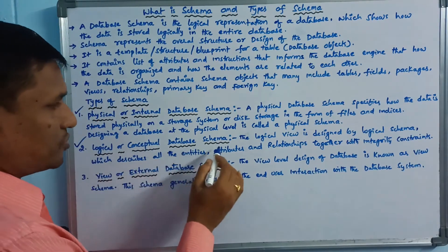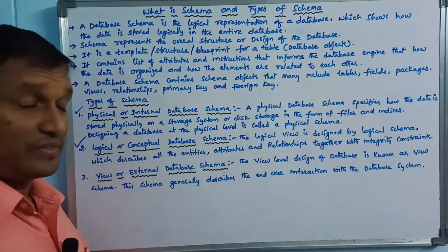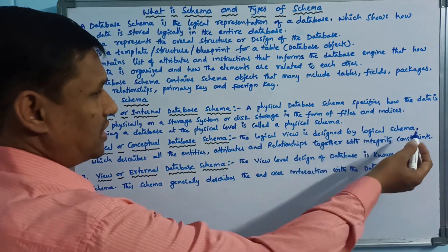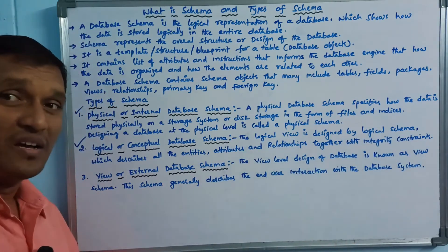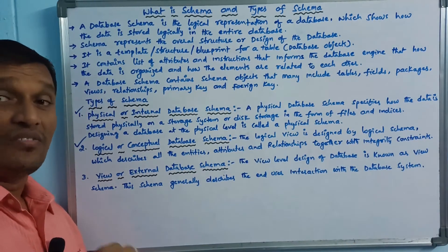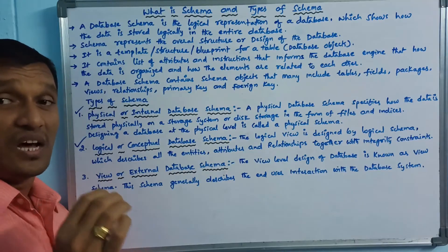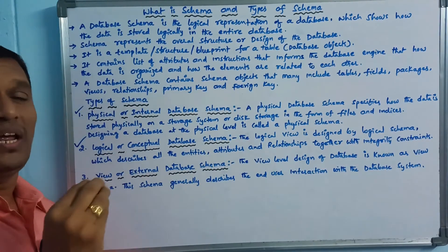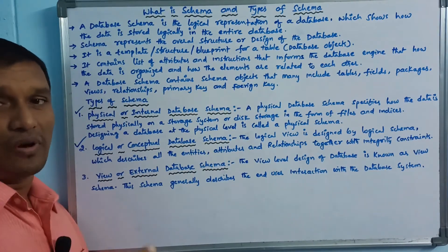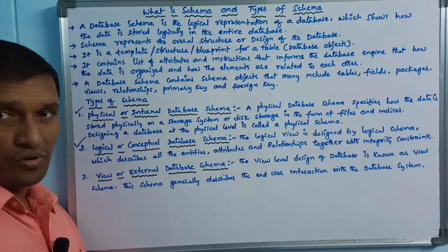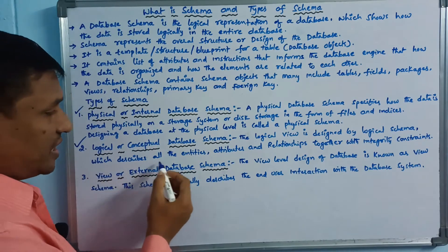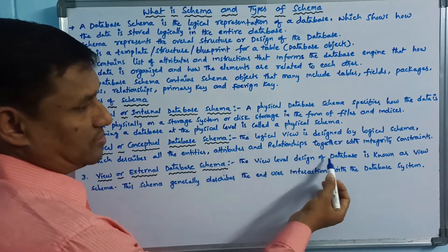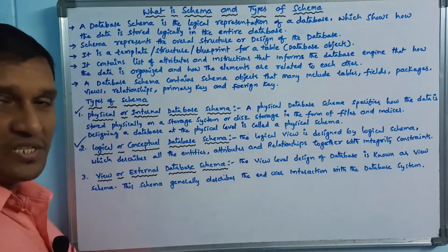The second one is the logical or conceptual data schema. The logical view is designed by a logical schema. The logical schema is created to describe all the entities, attributes, and relationships together with integrity constraints.